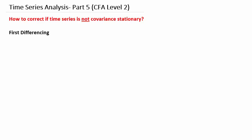If the time series is not covariance stationary, then we can make it covariance stationary by a process known as first differencing. In first differencing, what we do is subtract the immediate previous value from the current value of the time series.